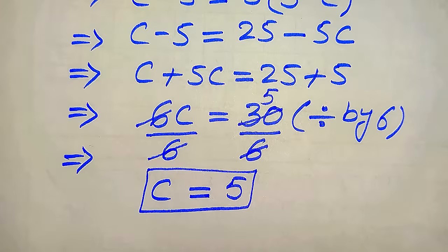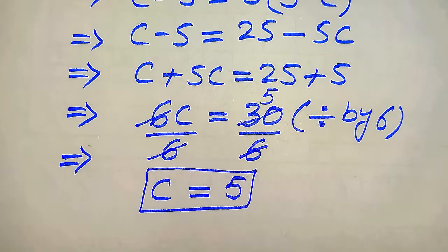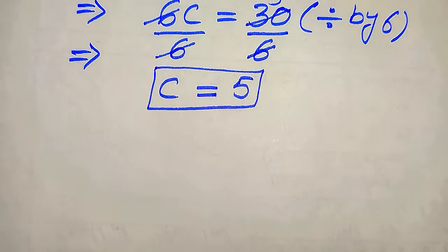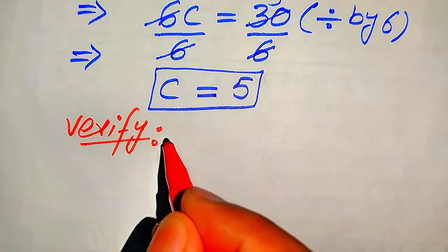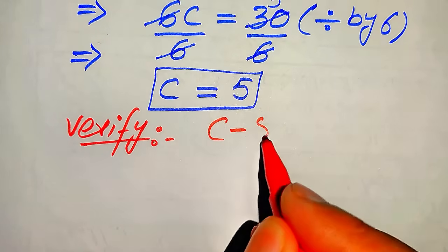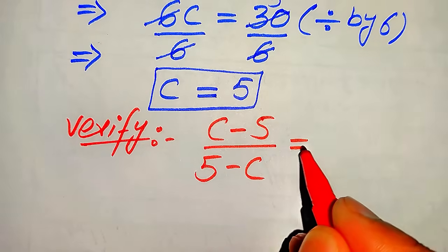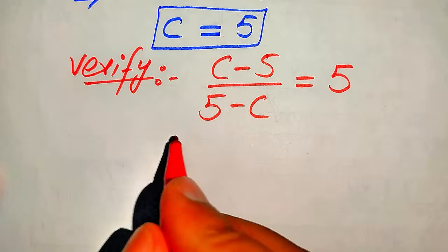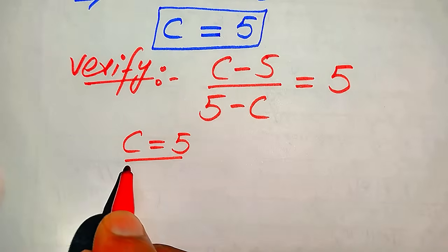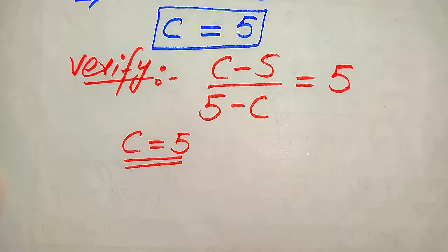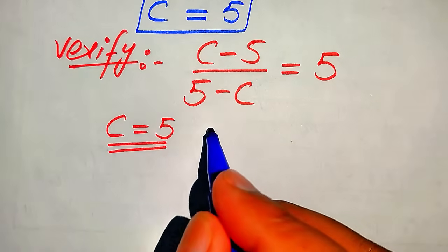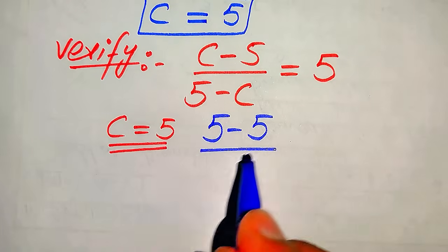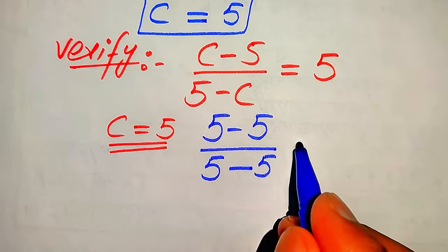From the first method we get one solution: c equals 5. Now we need to verify this root and check whether it satisfies the given question statement. For verification, we copy down the given equation: c minus 5 divided by 5 minus c equals 5. Substituting c equals 5 into the left hand side, this becomes 5 minus 5 divided by 5 minus 5.